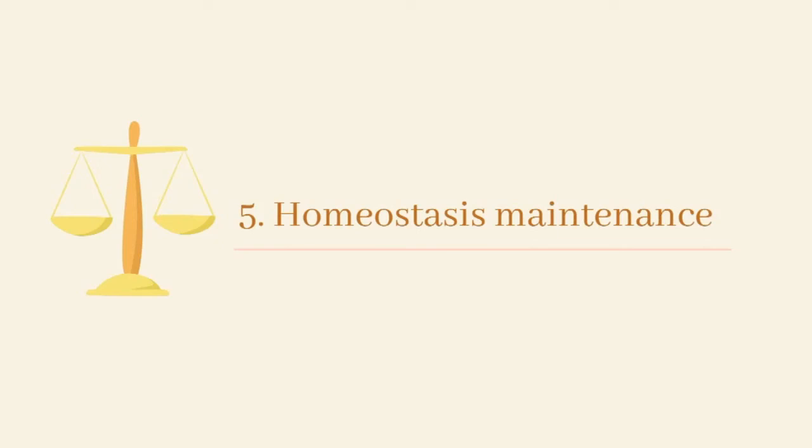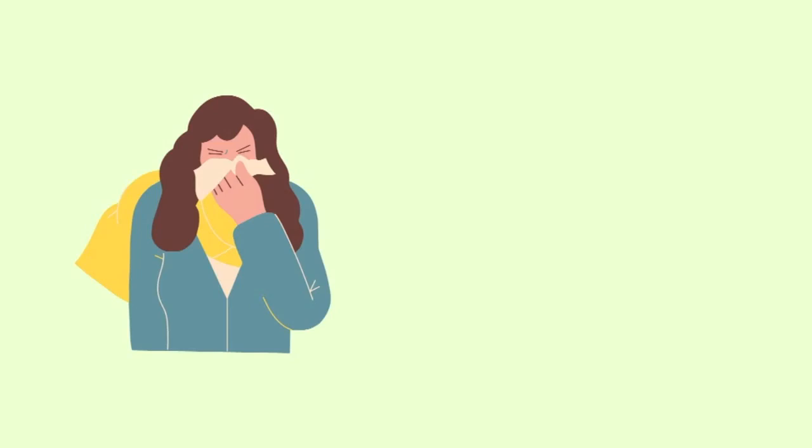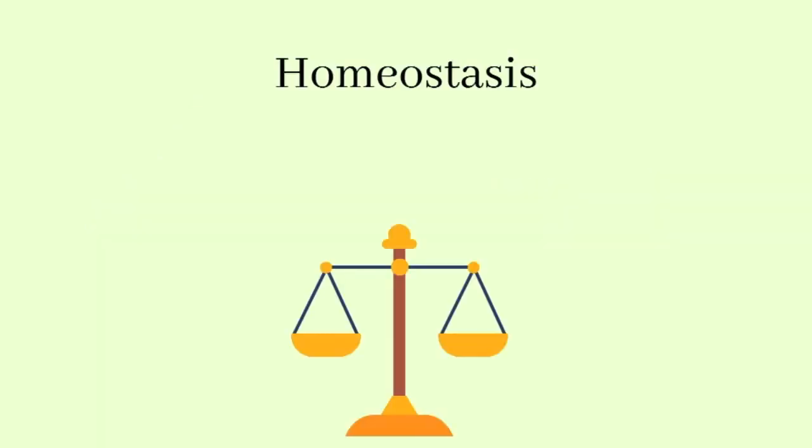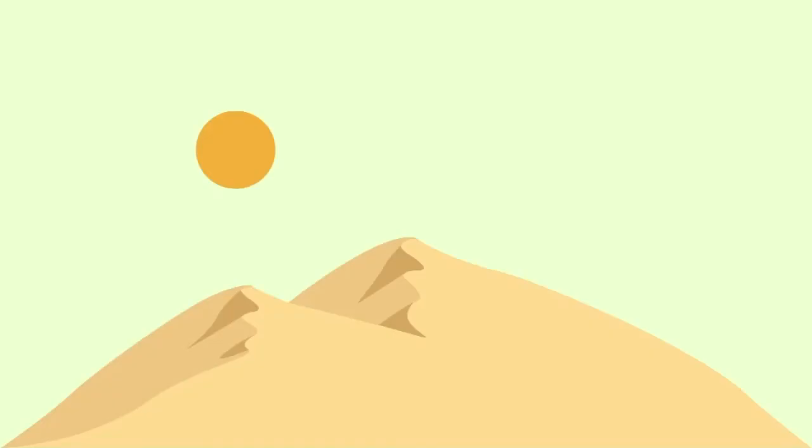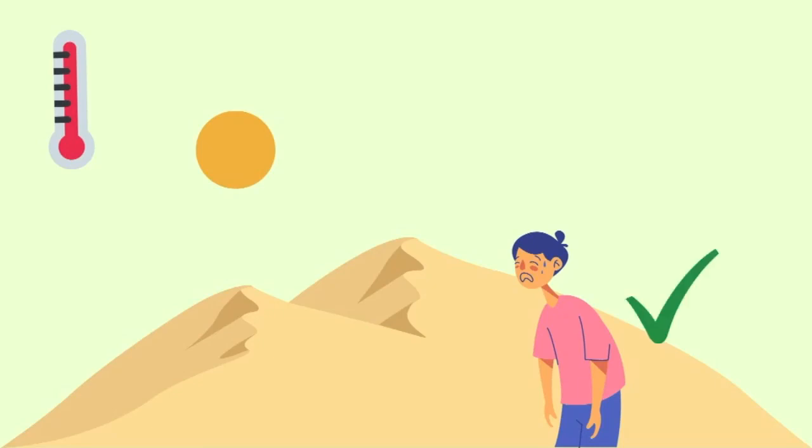5. Homeostasis maintenance. Have you ever had a fever? This is an example of homeostasis imbalance. Homeostasis refers to the ability for our body to stay balanced internally no matter how the outside environment changes. For example, if you are walking in a desert and the temperature is very high, you will start to sweat, which will cause your body temperature to stay around 37 degrees Celsius but not increase with the outside temperature.